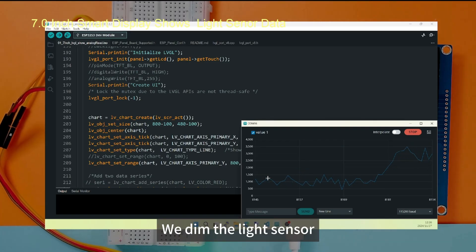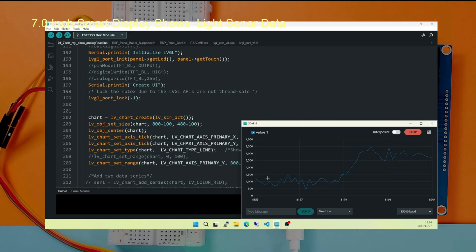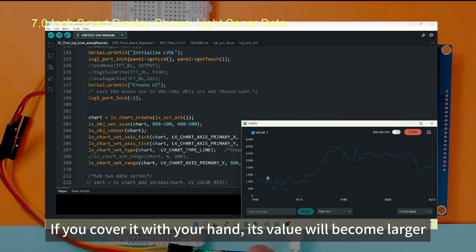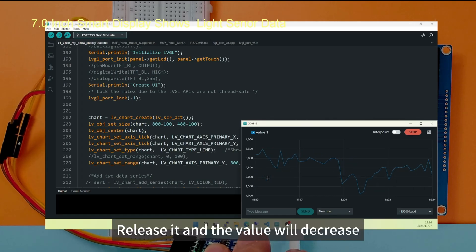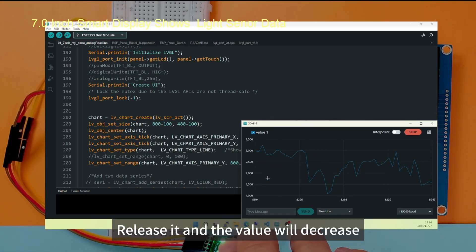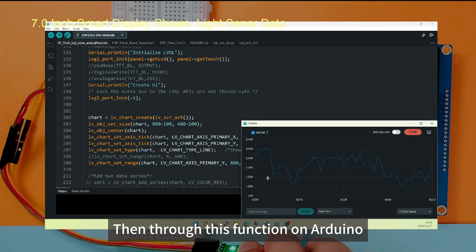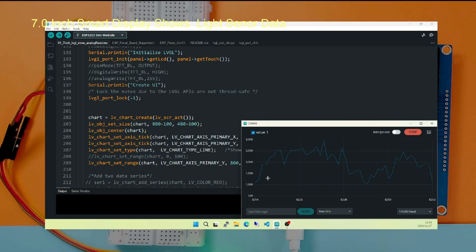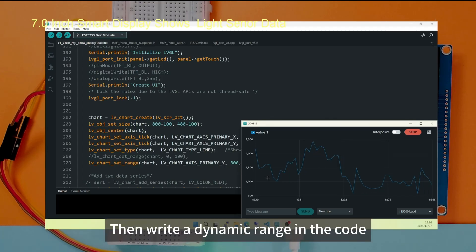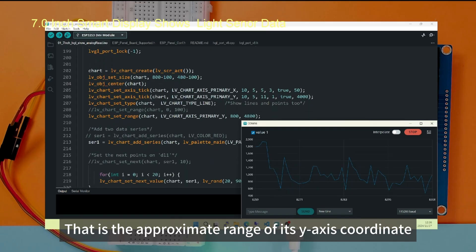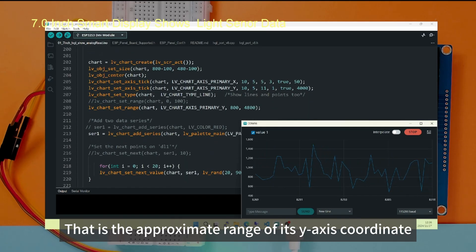We dimmed the light sensor. If you cover it with your hands, its value will become larger. Release it and the value will decrease. Then through this function on Arduino, we can roughly determine the dynamic range of the sensor. Then write a dynamic range in the code. That is the approximate range of its y-axis coordinates.